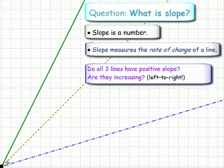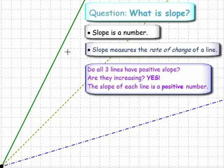Left to right, this one's going up - positive slope. Left to right, this one's going up - positive slope. So all three have positive slopes. If I have a number here, a number here, and a number here, all three of those numbers are bigger than zero.